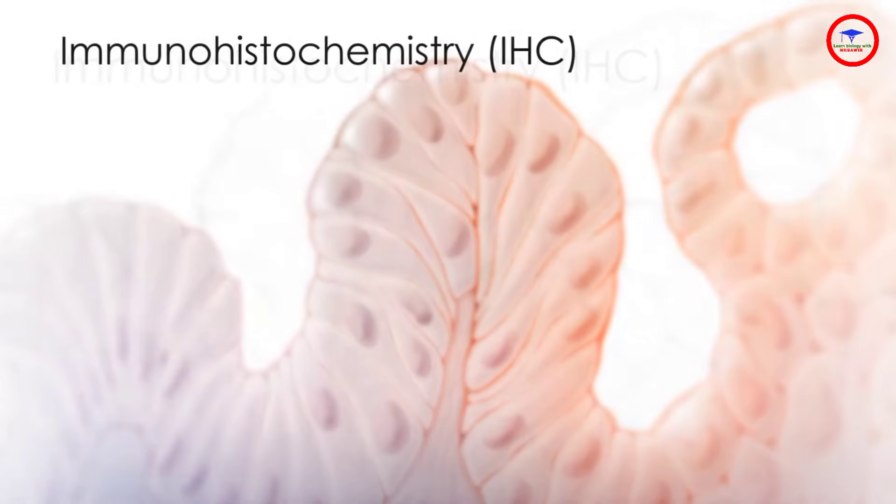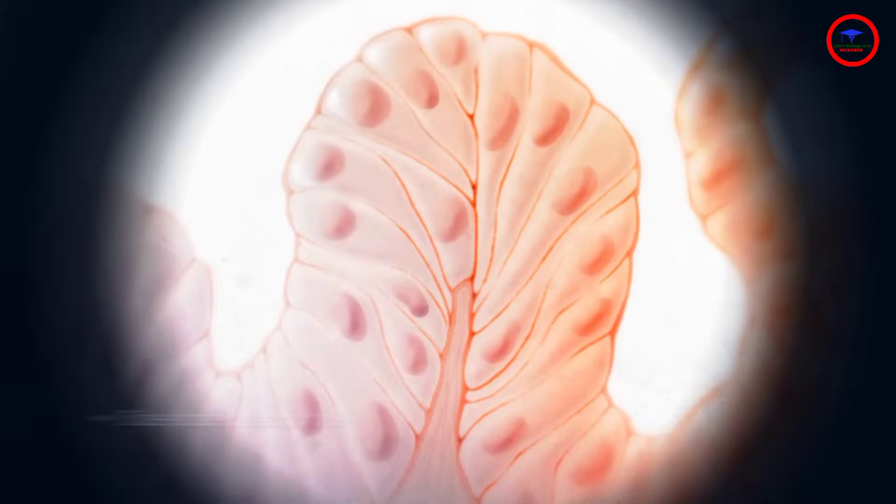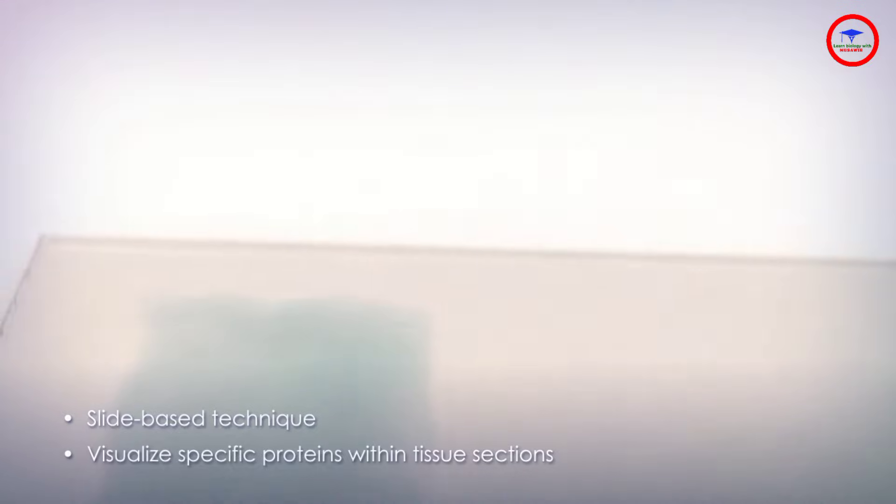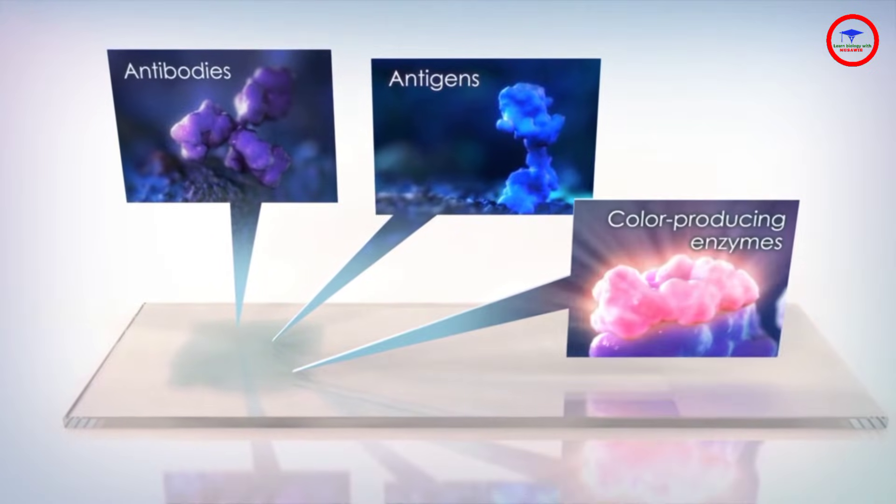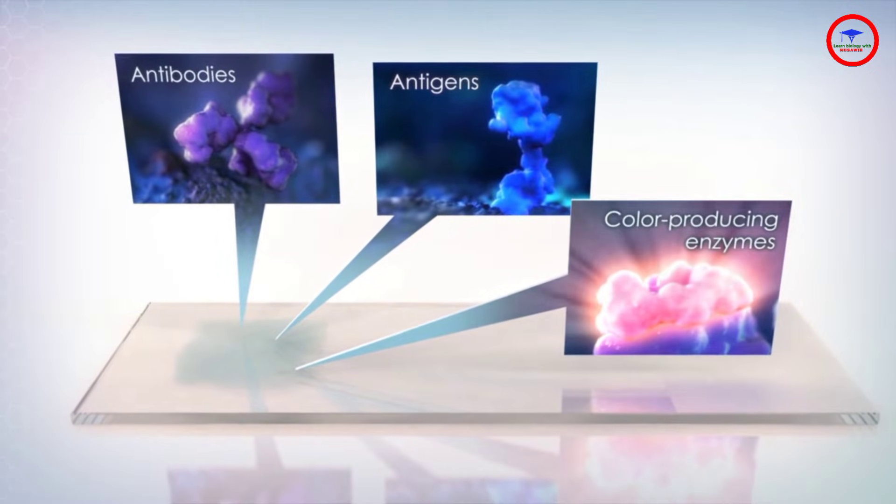Immunohistochemistry. IHC is a slide-based technique used to detect and visualize specific proteins within tissue sections. This is accomplished using antibodies, antigens, and enzymes capable of producing a color reaction.